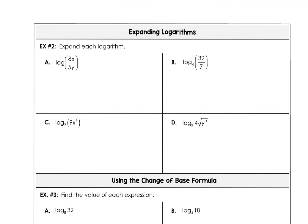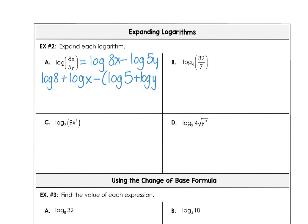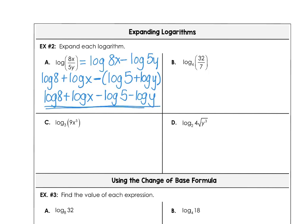Moving on to example 2, we have a condensed log and we want to go the other way — expanding it. The log of a quotient is the difference of two logs: log of 8x minus log of 5y. But 8 times x can be written as log of 8 plus log of x. And subtracting log of 5y gives minus log of 5 plus log of y. Distributing the subtraction: log of 8 plus log of x minus log of 5 minus log of y. And we've expanded that logarithm as much as possible.